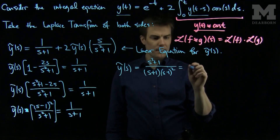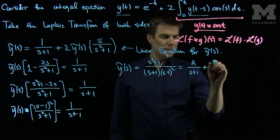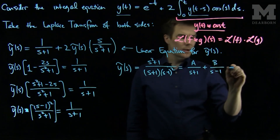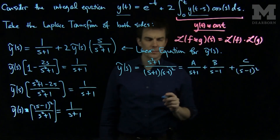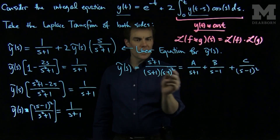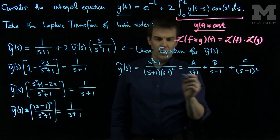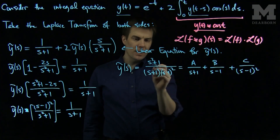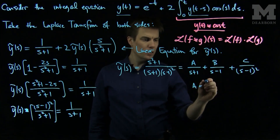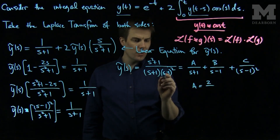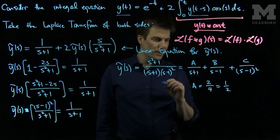The partial fraction decomposition is a over s plus 1, plus b over s minus 1, plus c over s minus 1 squared. We find a by multiplying both sides by s plus 1 and plugging in s equals negative 1: we get negative 1 squared plus 1 equals 2, and the denominator gives negative 2 squared equals 4, so a equals 1 half.